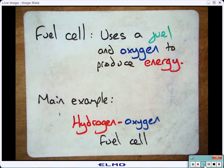That brings us to what is a fuel cell. The basic definition for a fuel cell is something that uses a fuel and oxygen to produce energy. The main example is where you have a hydrogen-oxygen fuel cell. So what this means is they have a fuel cell that contains hydrogen and oxygen and they react together.